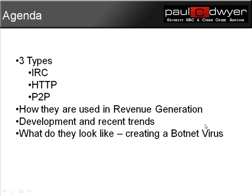By way of an agenda, what I'll do is describe the three main types of botnets: IRC, HTTP, and P2P. I'll also discuss how they're used in revenue generation and the development and recent trends in relation to botnets. Finally, we'll look at what they look like and have a look at actually creating a botnet virus.